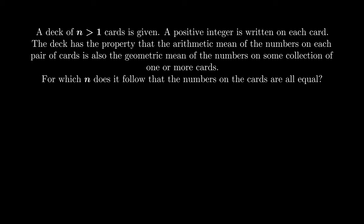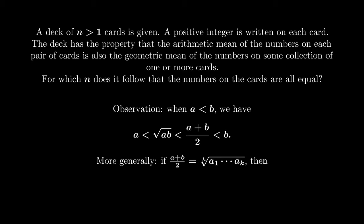We start by recalling that the geometric mean is always smaller than the arithmetic mean. In particular, if the numbers a and b are distinct, then all these inequalities are strict. This means if we want to make the geometric mean match the arithmetic mean, we need to add some large numbers into this product.